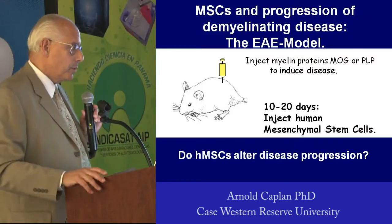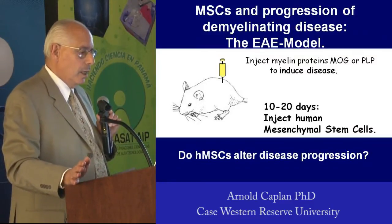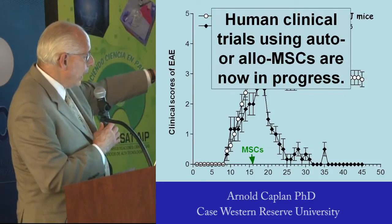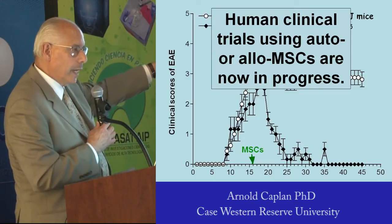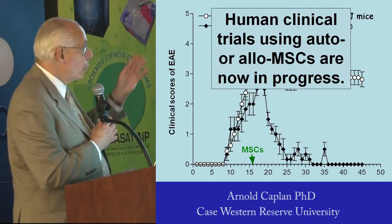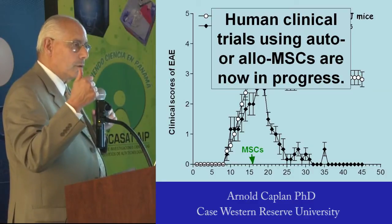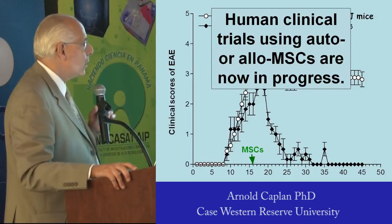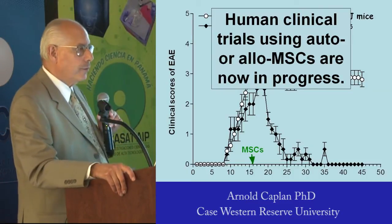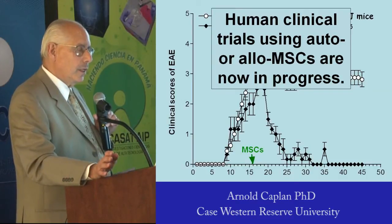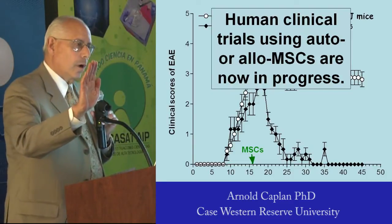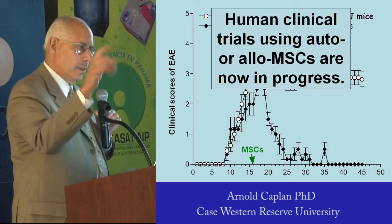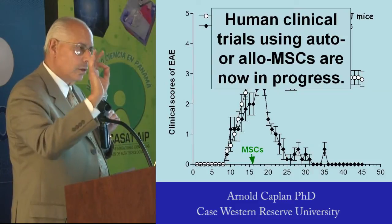So we did the following experiment. There's a mouse model of MS called the EAE model. You put peptide myelin in adjuvant, give it to a mouse, and the clinical score climbs — a score of three means the animal cannot have a bowel movement, cannot walk, cannot eat on its own, and has to be hand-treated by thoughtful technicians. Score of four means the animal is dead. At a clinical score of three, we give a single tail vein injection of human MSCs into an immunoreactive mouse — which we were taught is forbidden.